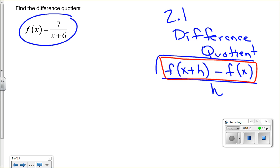The red folded box here is the first thing to compute. So f of x plus h, that's going to be 7 over x plus h, and then we have to add 6 to that. And that's going to be minus f of x, in this case 7 over x plus 6.